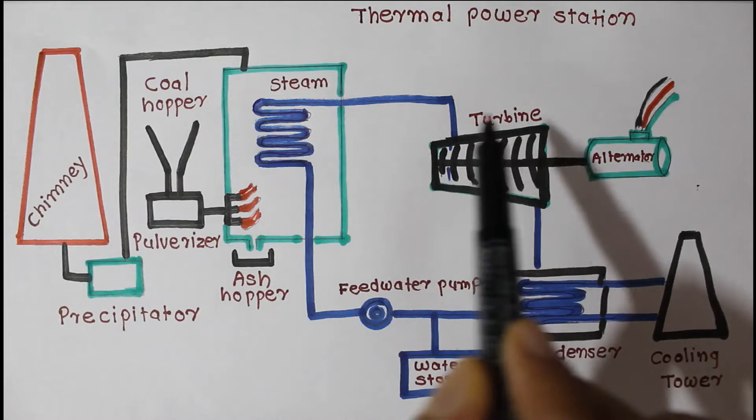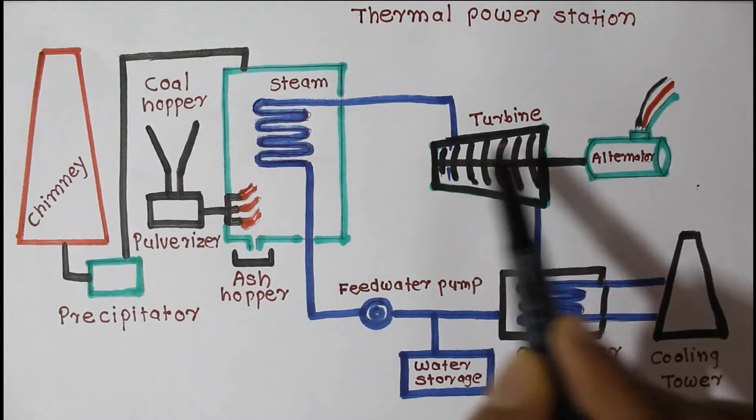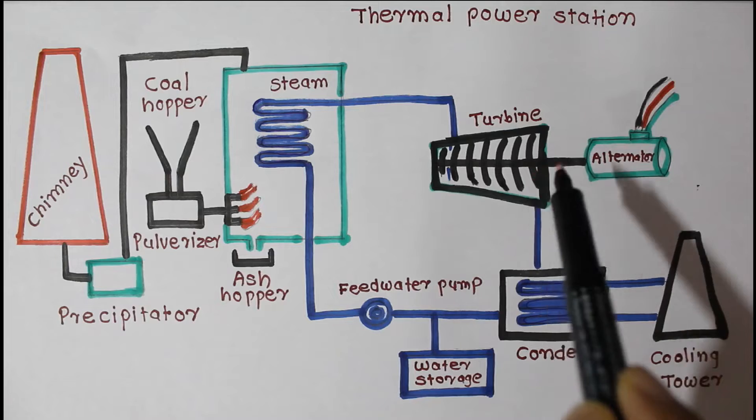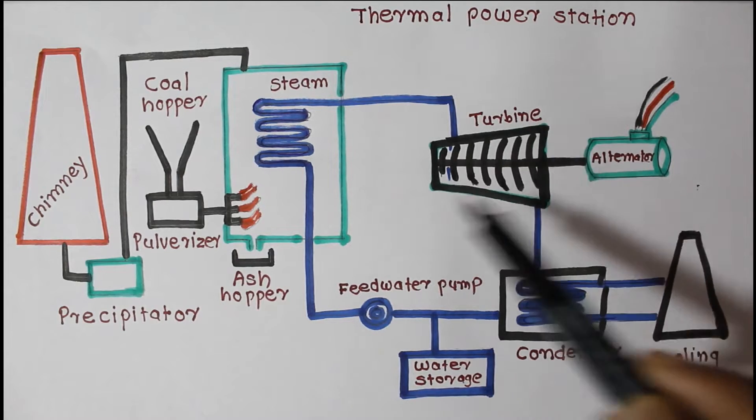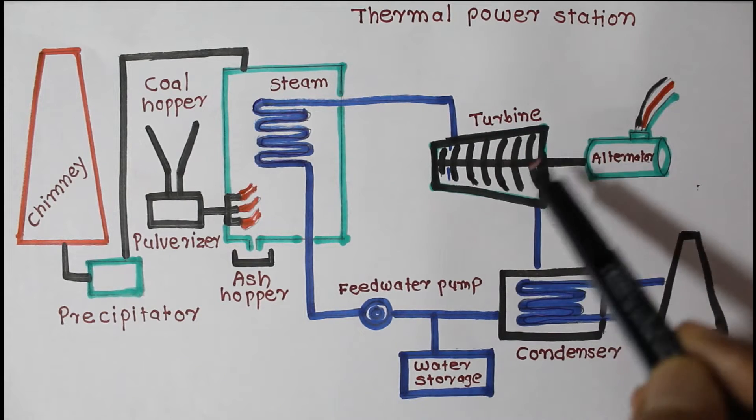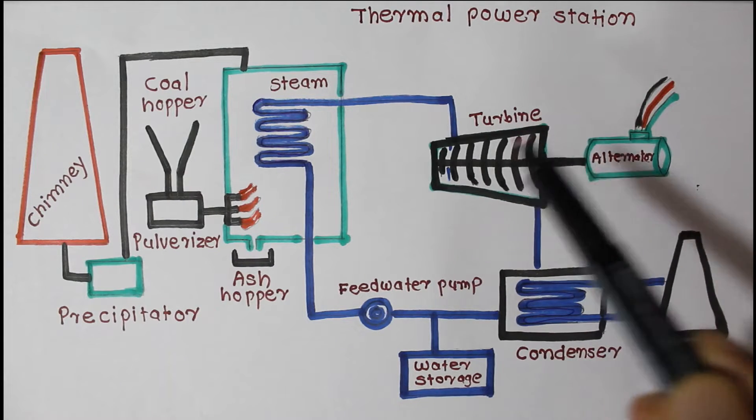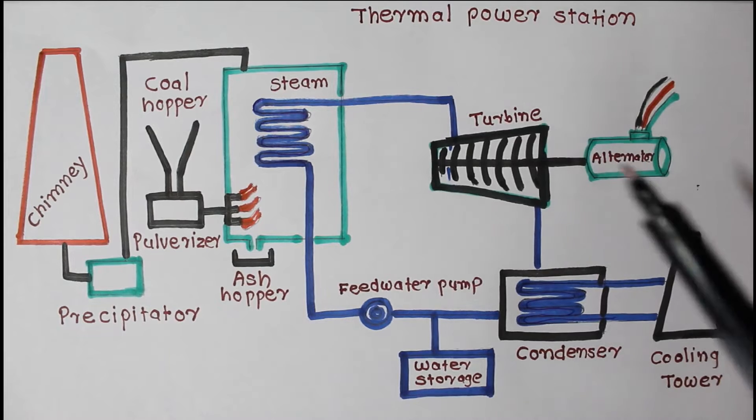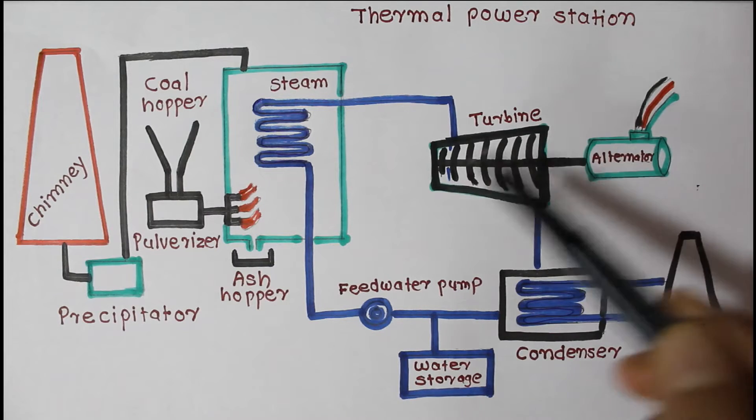The steam generated in the boiler is sent through a steam turbine. The turbine has blades that rotate when high velocity steam flows across them. This rotation of turbine blades is used to generate electricity.